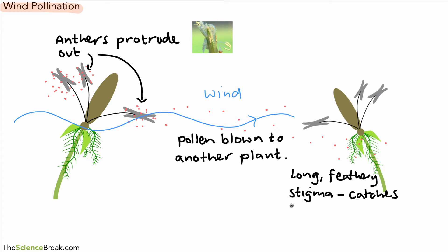So the stigmas are structured very differently in a wind pollinated plant. They're long and feathery, and it's important that they're long and feathery and hanging out of the plant because the stigma or the stigmas can catch the pollen as it flows or as it is carried by the wind.